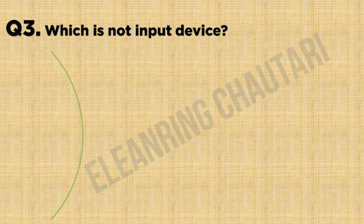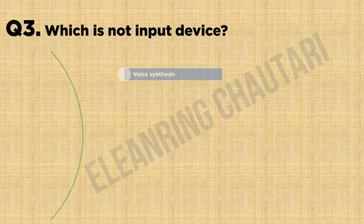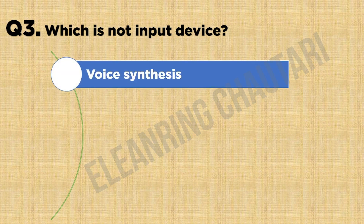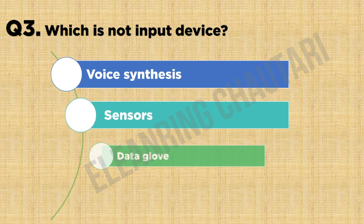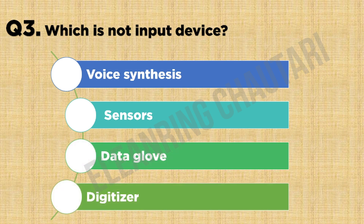Question number 3: Which is not an input device? Option A: Voice synthesis. Option B: Sensors. Option C: Data globe. Option D: Digitizer. The answer to this question is Option A: Voice synthesis.